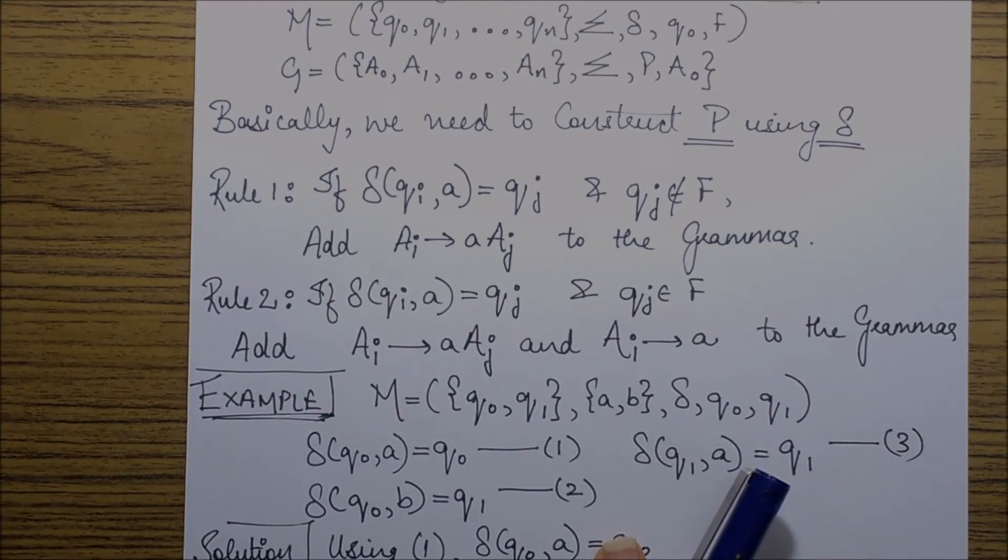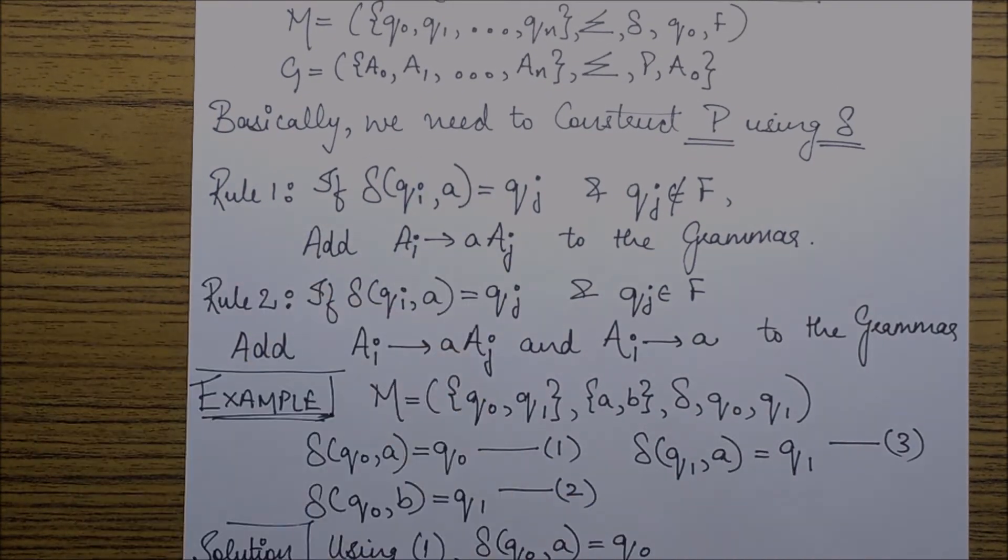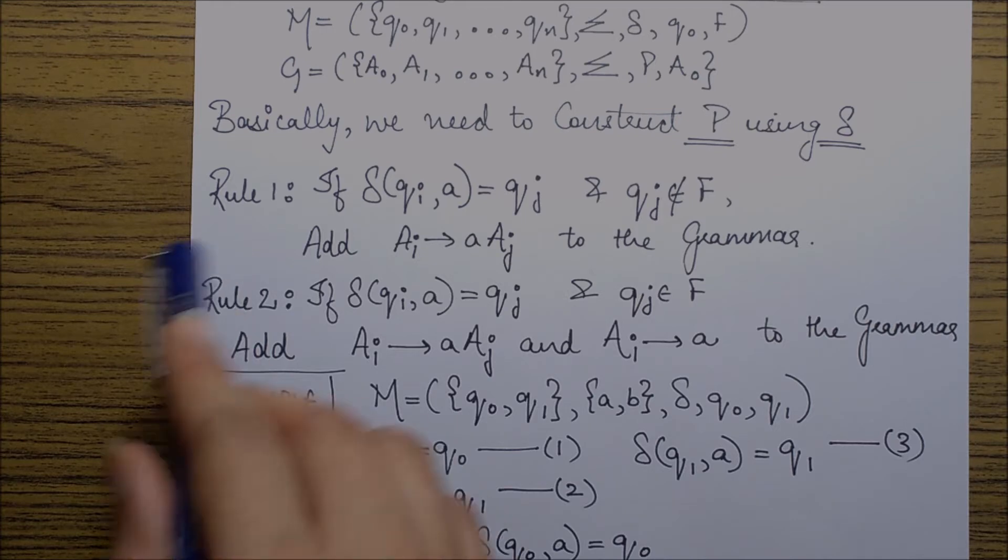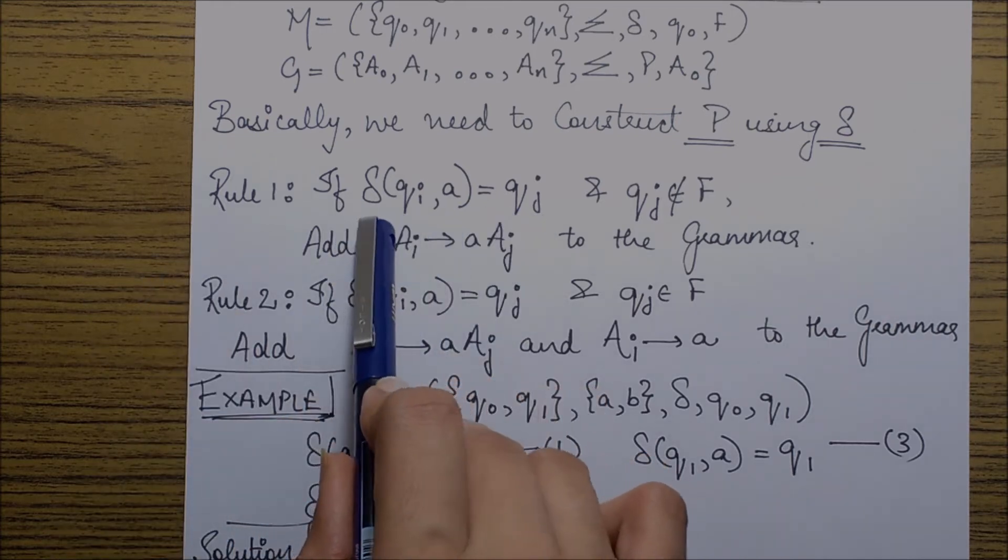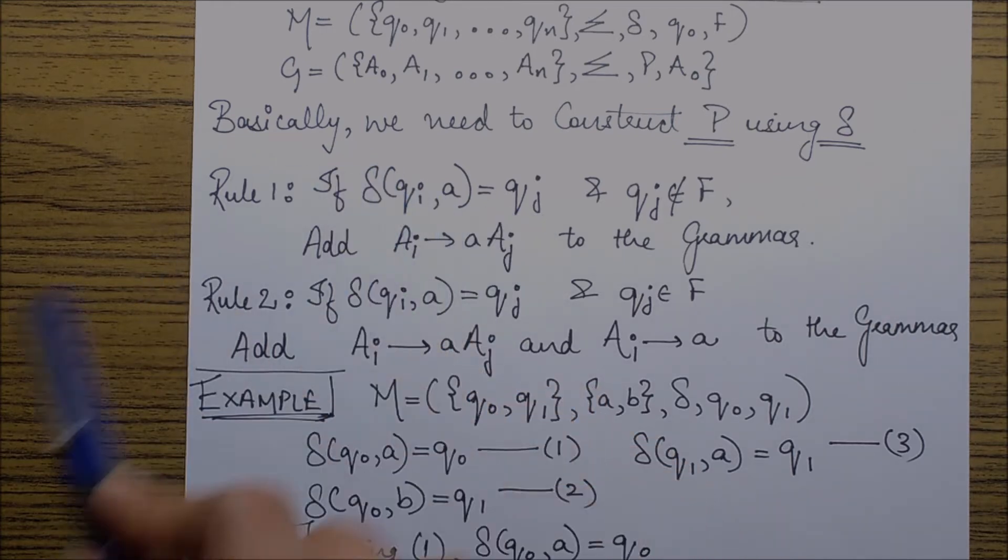So there are only two simple rules to perform the task. The first rule says that if there is an entry stating that there is a transition delta.